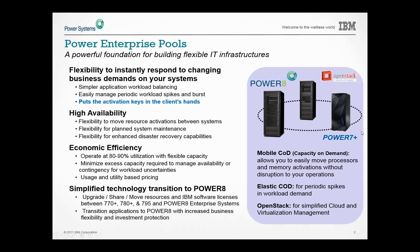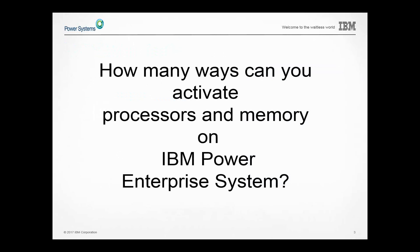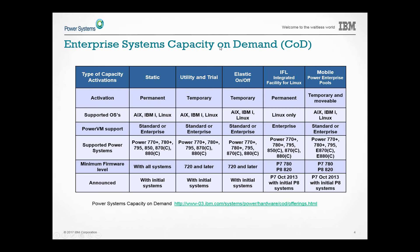On enterprise systems we have lots of different ways to turn on processors — not quite as many as for memory, but certainly several different methods. I built a chart to explain what those look like. Once upon a time you bought systems and everything was active — you turned on everything. But over time, especially on enterprise systems, you don't want downtime — you need to live in a world of 24x7x365.